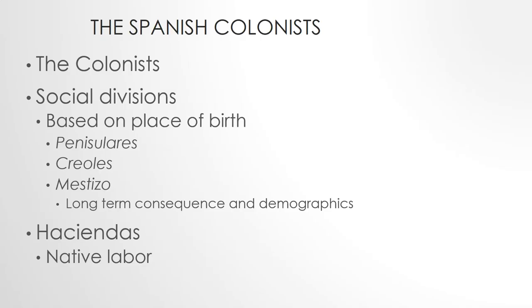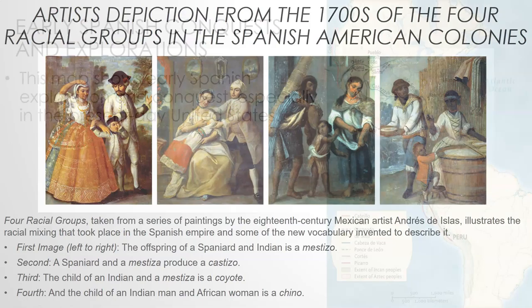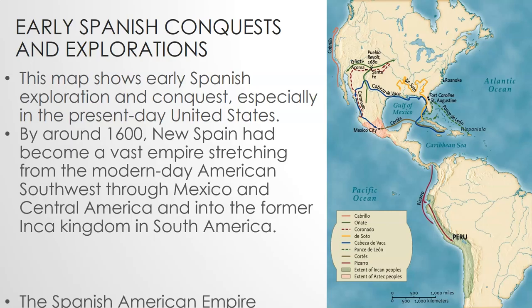The Spanish wanted to control native labor and convert them. This is really important — focus on the differences in how different European powers dealt with the Native Americans. The Spanish wanted to control their labor and convert them to Catholicism. The English, on the other hand, were not interested in controlling native labor. There were some attempts at conversion, but the English were really interested in land — displacing the native population and taking it over. The French were focused on economics and fur trading, trying to get better deals and work with native peoples, not control their labor.